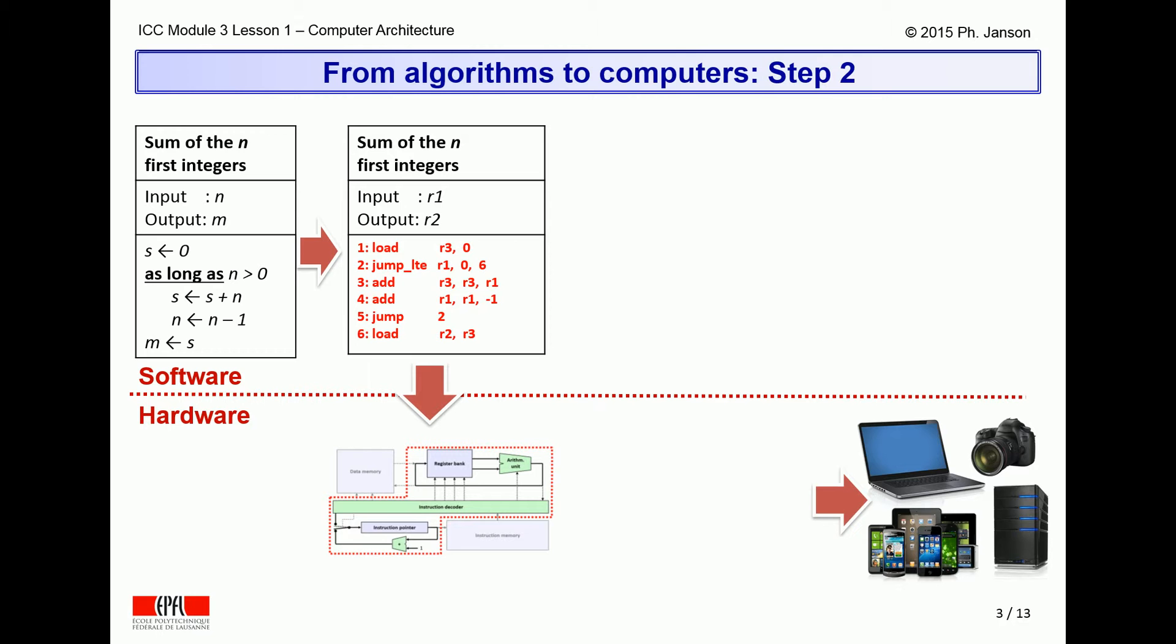The preceding video clip in this series on architecture explained how algorithms have to be expressed in assembler language to be understandable by computers. The present video clip will now explain what architectural building blocks computers need to be able to execute such assembler programs.